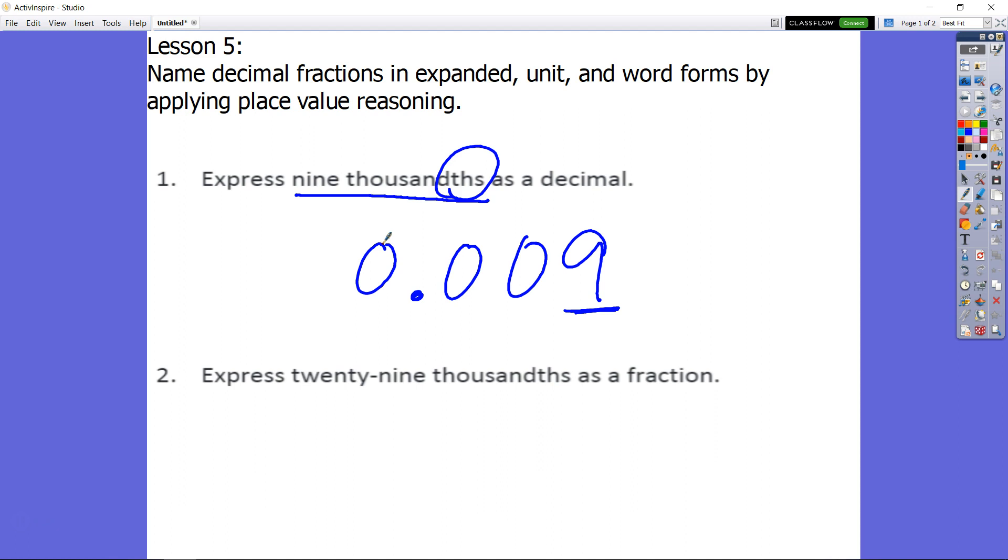And then it says express 29 thousandths as a fraction. So now make sure we understand what they're asking us to do. I have 29 in the thousandths, so it's simply 29 over 1000.